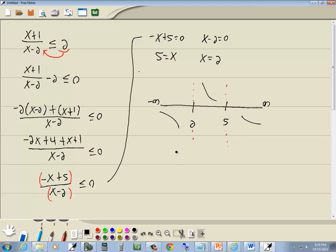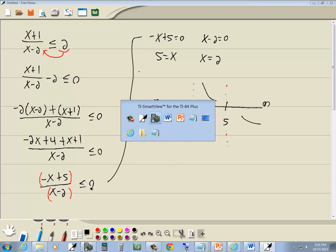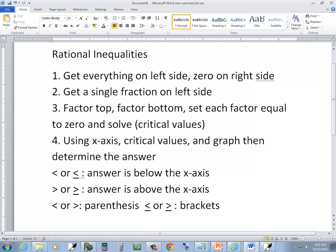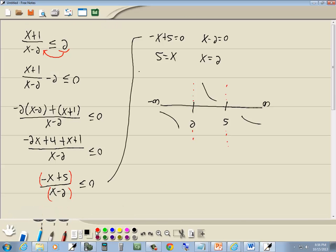If it's below in part of it, it's below in all of it. If it's above in part of it, it's above in all of it. Now, this is a less than or equal to 0. Less than or equal to 0 answer is below the x-axis. So the answer is below right here and right here.